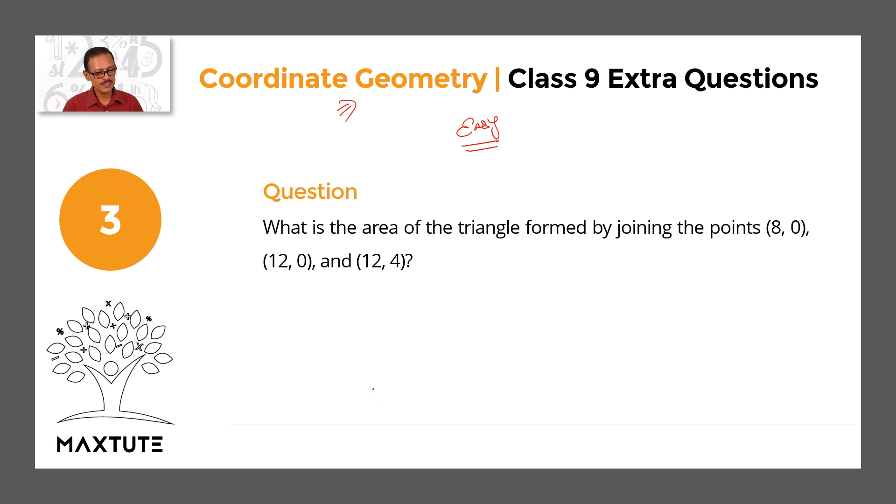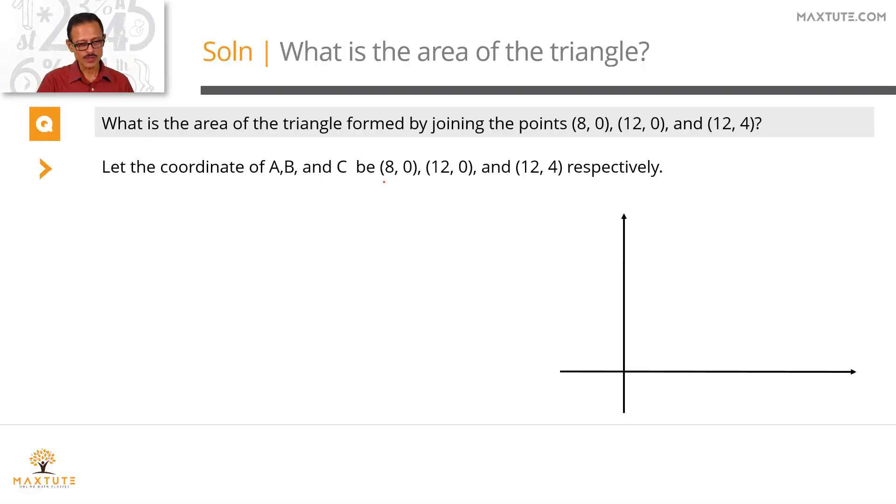Step one, let's plot all these three points. Look at the first two points. Let the coordinates of points A, B, and C, which are the vertices of the triangle, be (8, 0), (12, 0), and (12, 4).